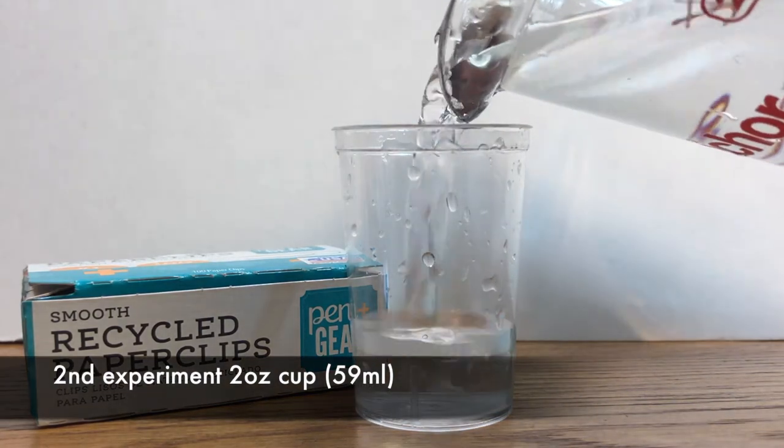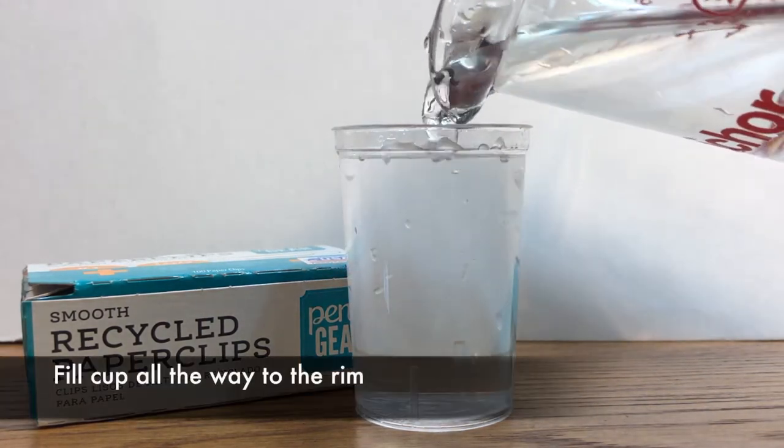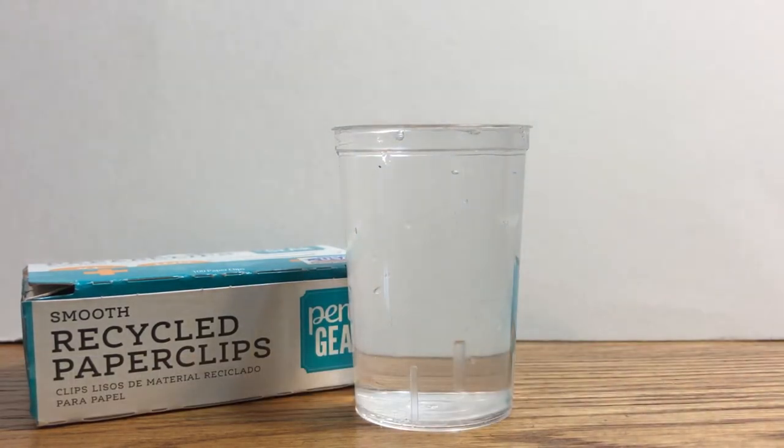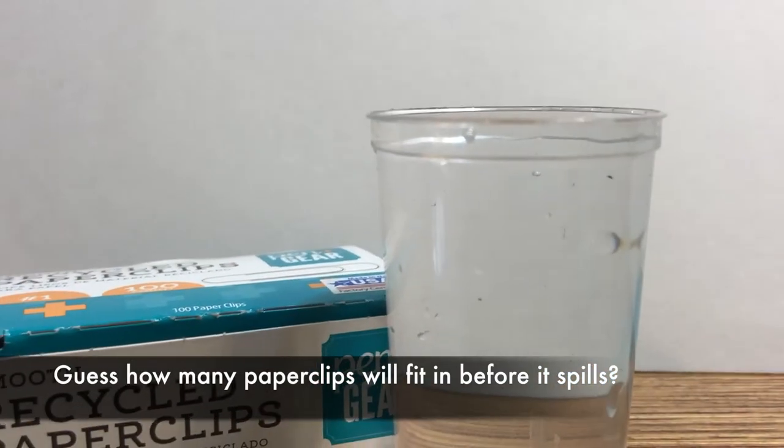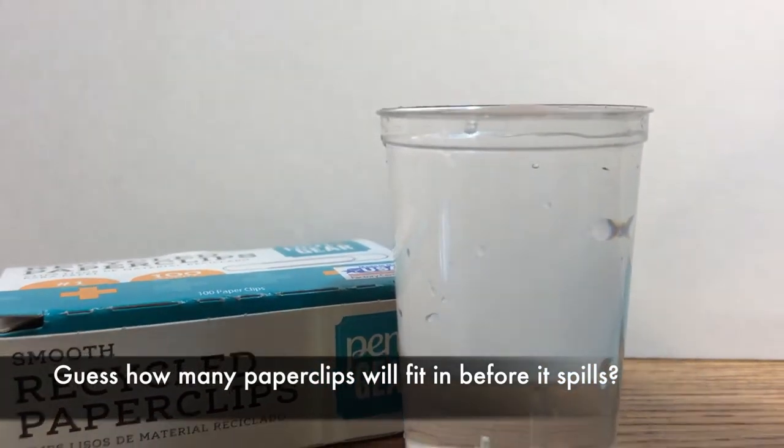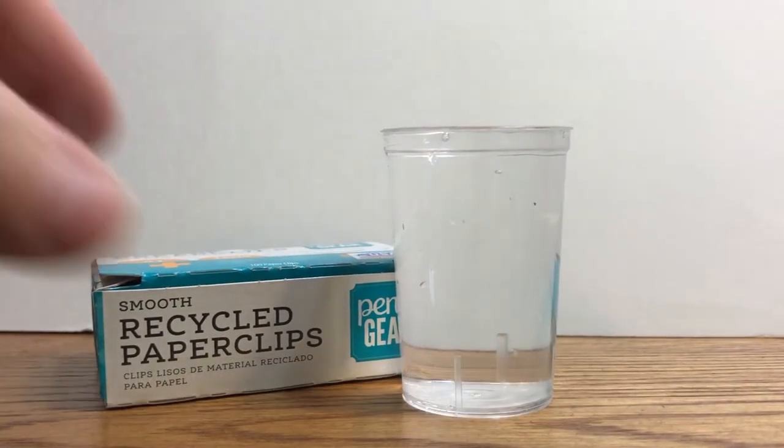So here's a second experiment. Two-ounce cup, like a shot glass. Fill it all the way to the rim. And then right there, you're going to make your prediction this time. Now, this is one-fourth the size of the cup. So we're going to make a prediction on how many paper clips can fit in this cup. So here we go.